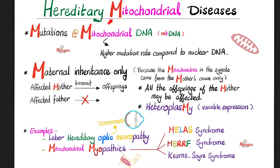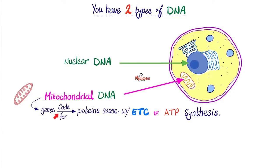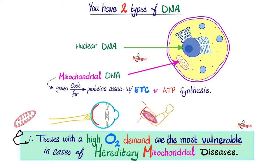Can you give me examples of these hereditary mitochondrial diseases? Yes, there is the infamous Leber hereditary optic neuropathy. And we have mitochondrial myopathies, which include many diseases — let me give you three: MELAS syndrome, MERRF syndrome, and Kearns-Sayre syndrome. The mitochondrial DNA contains genes that code for proteins associated with the electron transport chain and ATP production. That's why in these patients, the organs that are most active and in the greatest need of ATP will suffer the most, such as the optic nerve, eyes, muscles, heart, and brain.